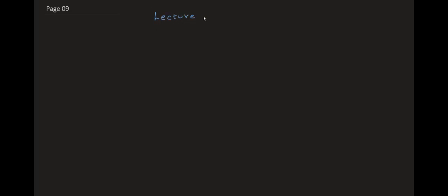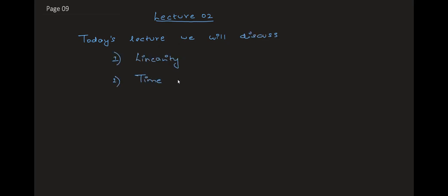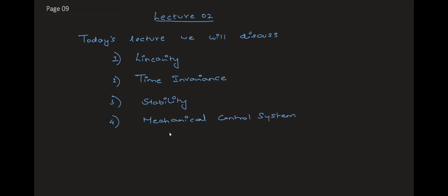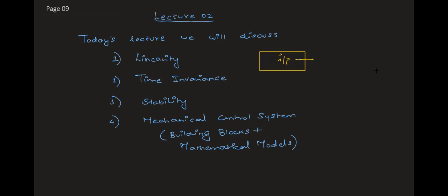Hello everyone, welcome to lecture two of control systems. In today's lecture, we are going to see what an LTI system is all about. We will first see what is the linearity principle, what is a time invariance condition, then what is the stability of your control system, followed by a mechanical control system. The building blocks and the mathematical model for a mechanical control system will be discussed in this lecture.